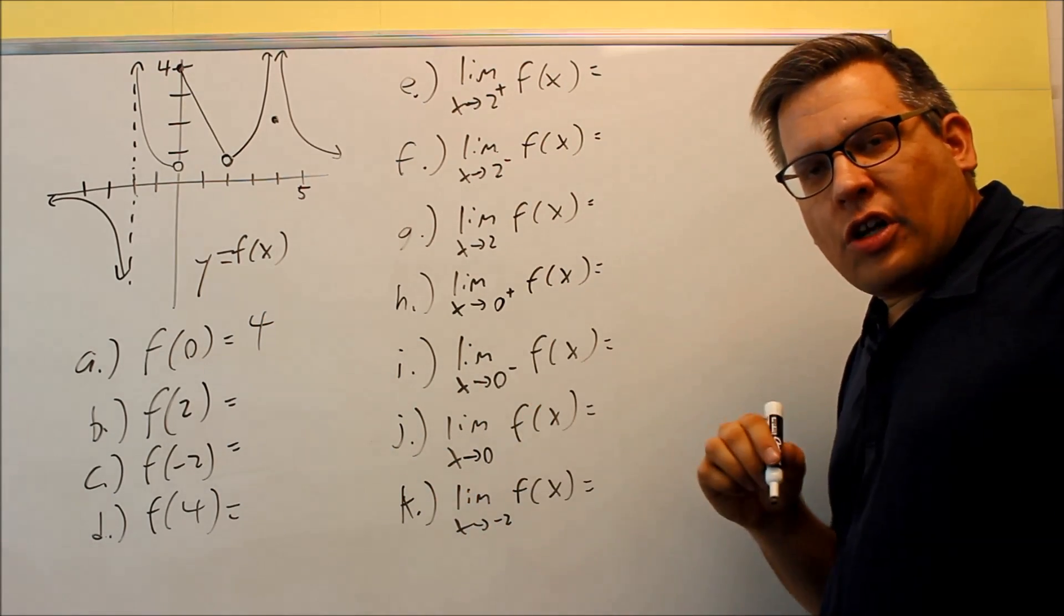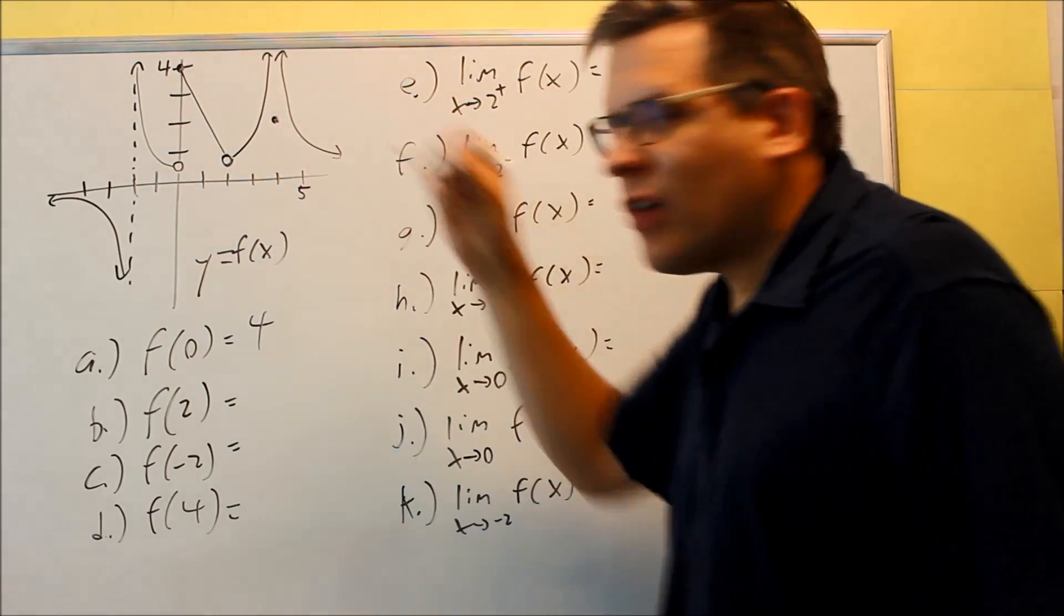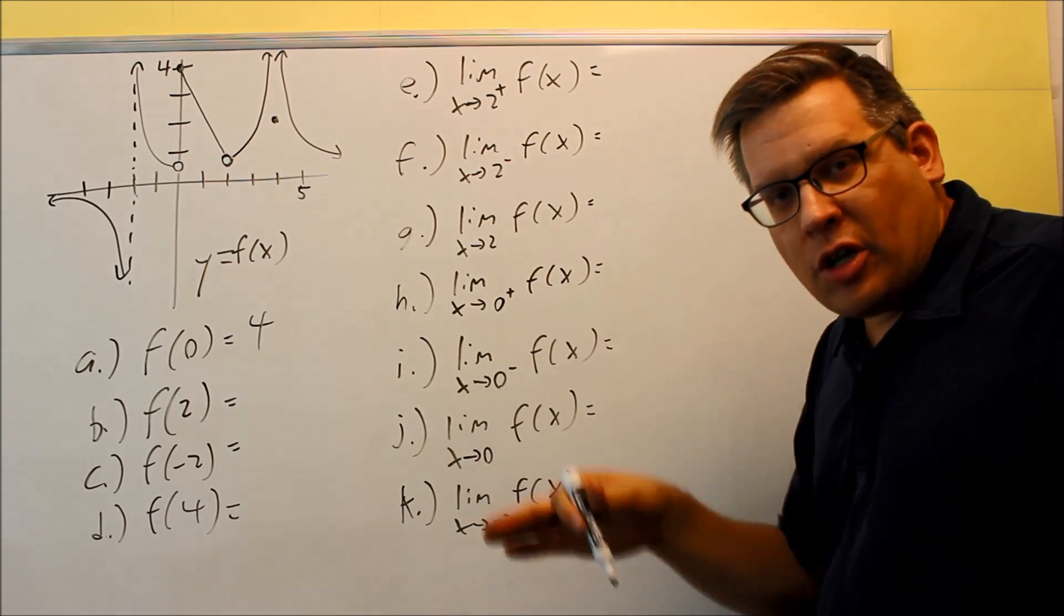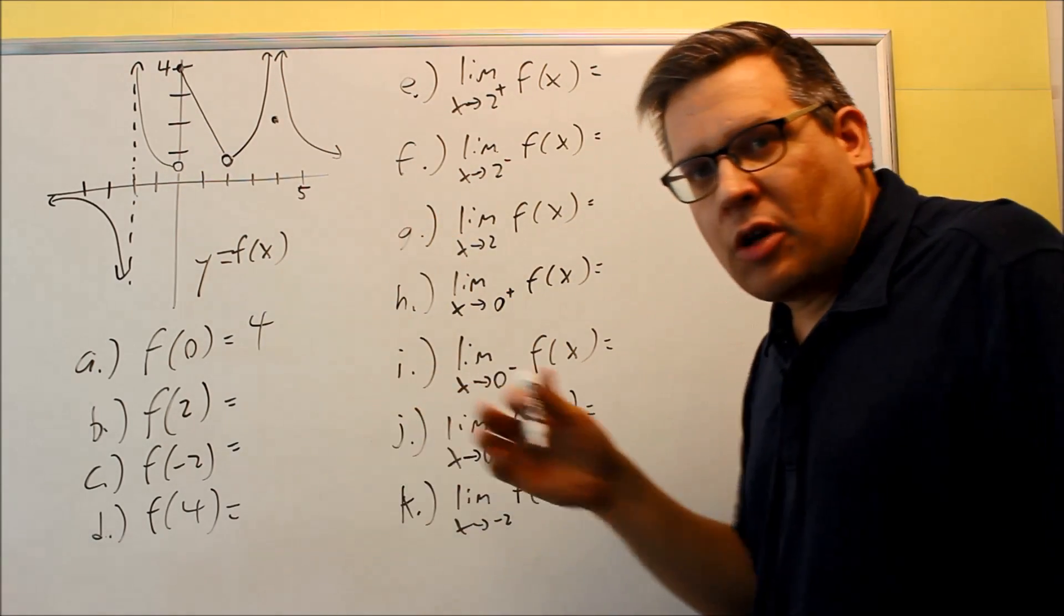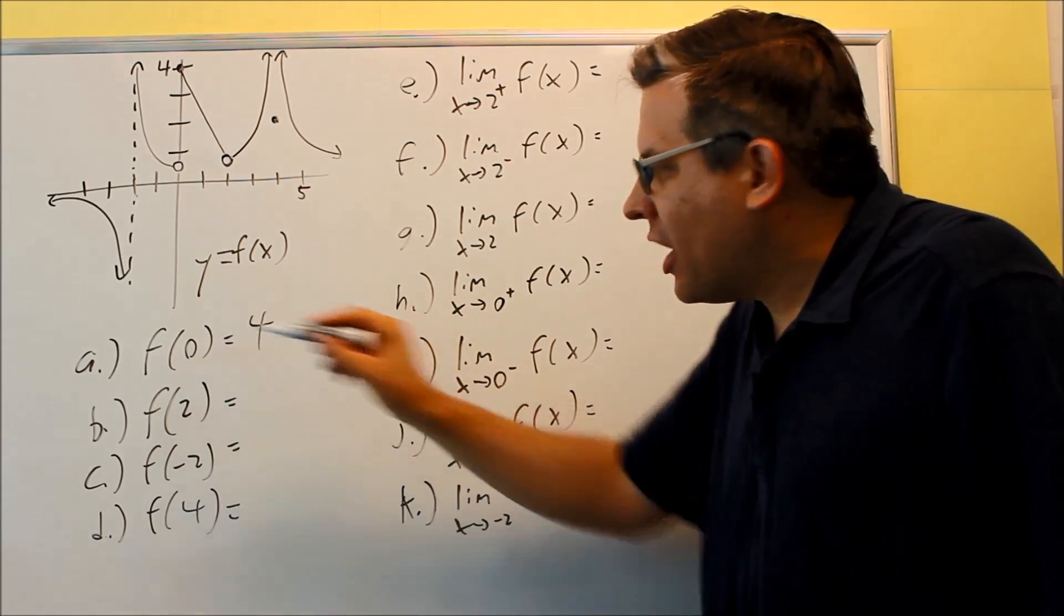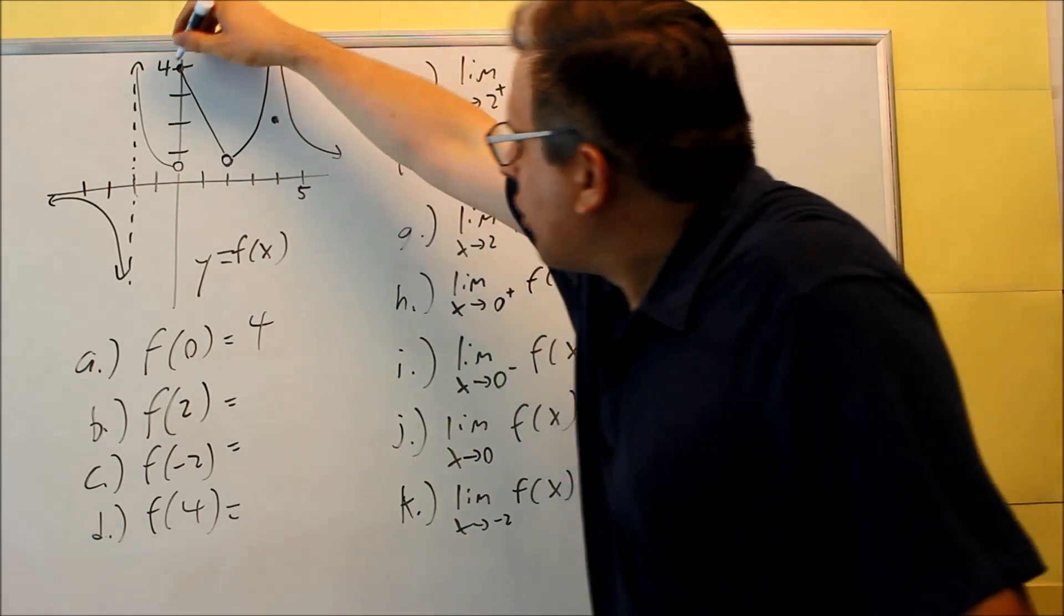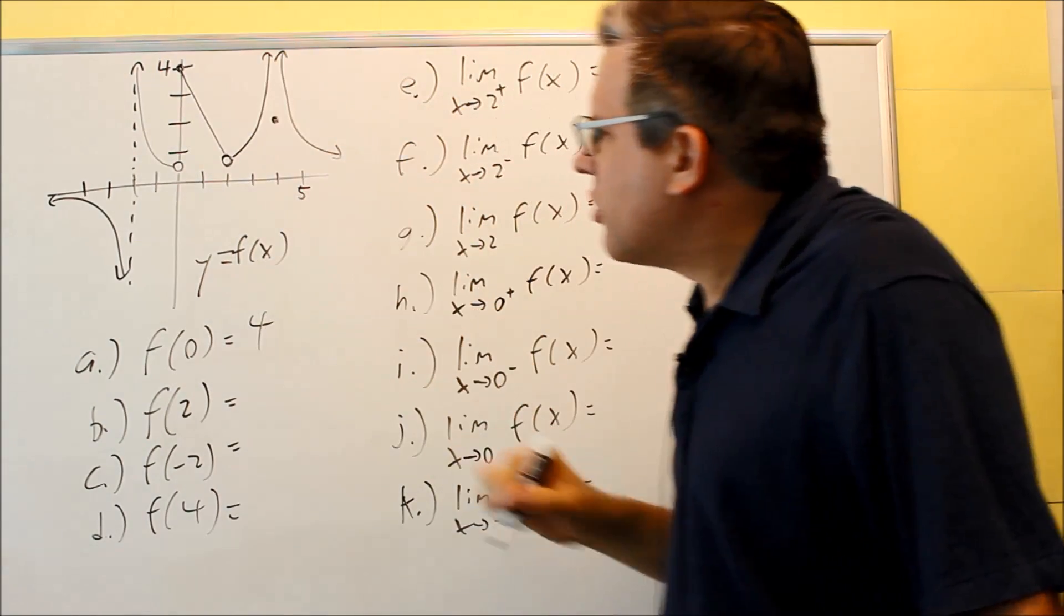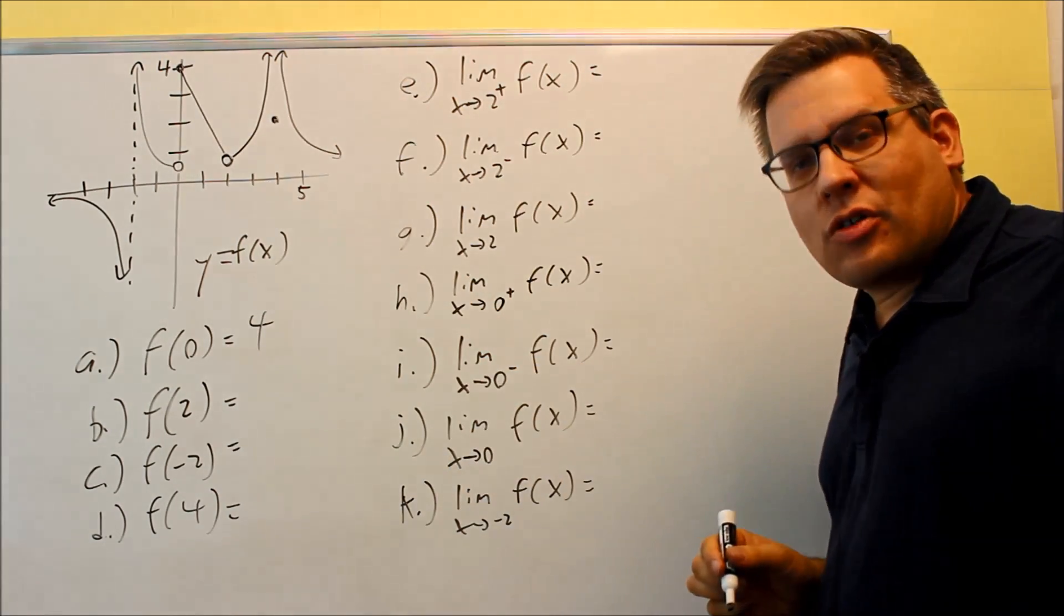If you're thinking it wouldn't exist because it has two different values, you're thinking of a limit in that case. These are not asking for limits, just simply for what value is defined when x is zero. That's the closed circle, this one right here - the y value is four.